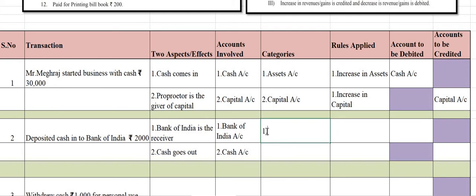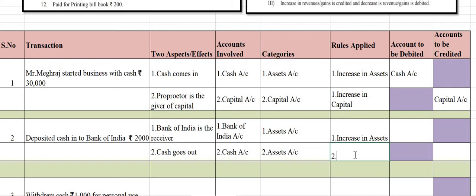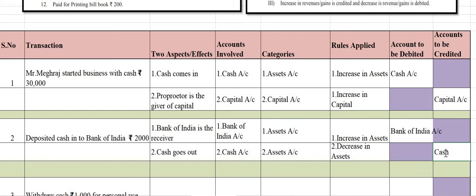Bank of India account is an asset — just like cash, bank balance is also an asset. Cash account is also an assets account. When you deposit cash into Bank of India, your bank balance increases — so there is increase in assets. Cash is going out — so there is decrease in assets. Therefore, Bank of India account is debited and cash account is credited.